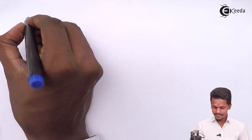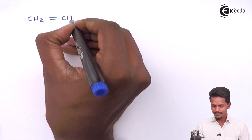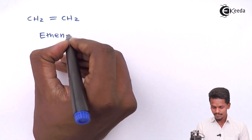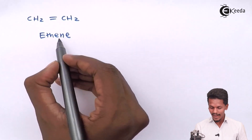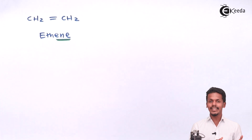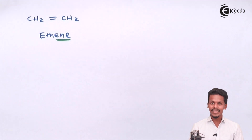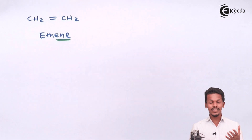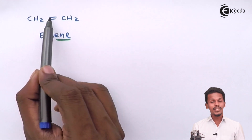The first member of alkenes is basically ethene. This is the name which ends with the suffix '-ene', which clearly indicates that this would be an alkene. Just by the last suffix in this name or nomenclature, we could predict that this would be an alkene. Moreover, we could see that there is a carbon-carbon double bond in this case.